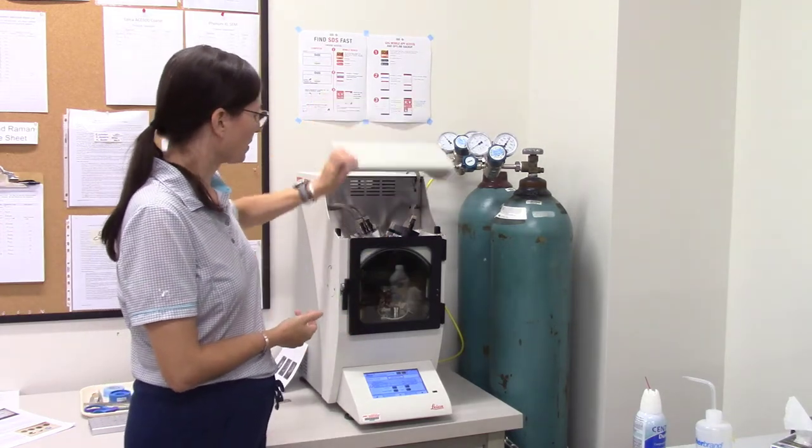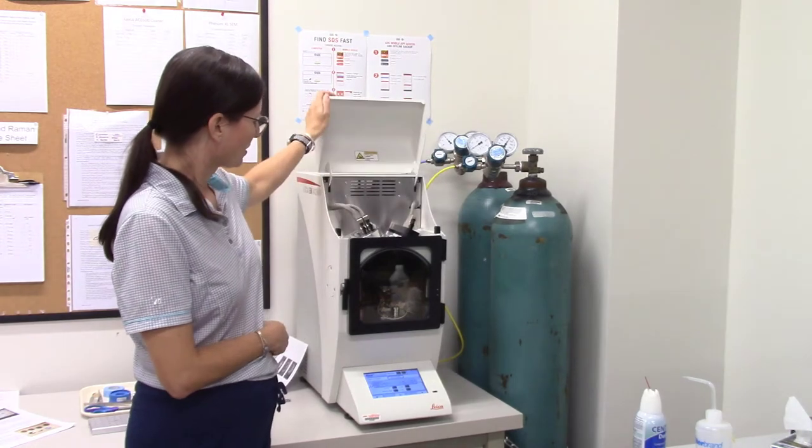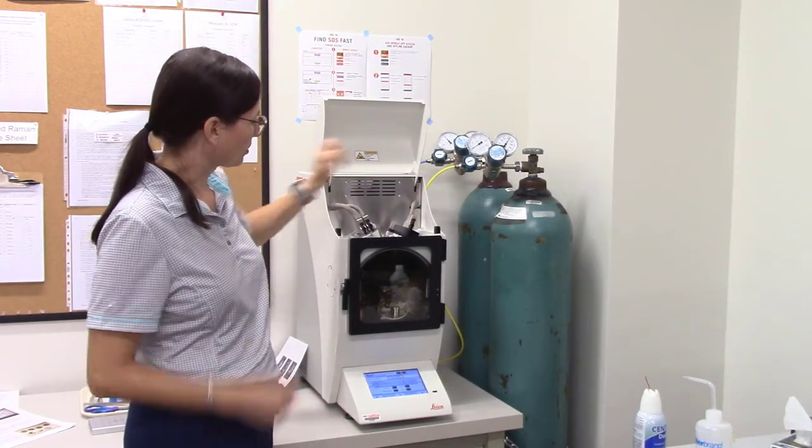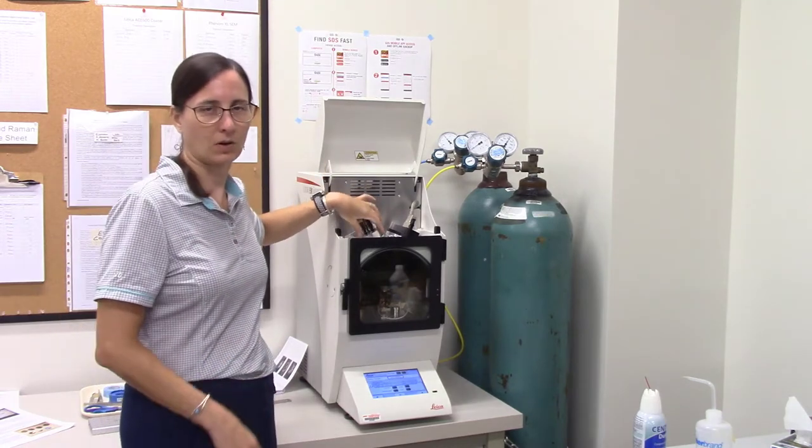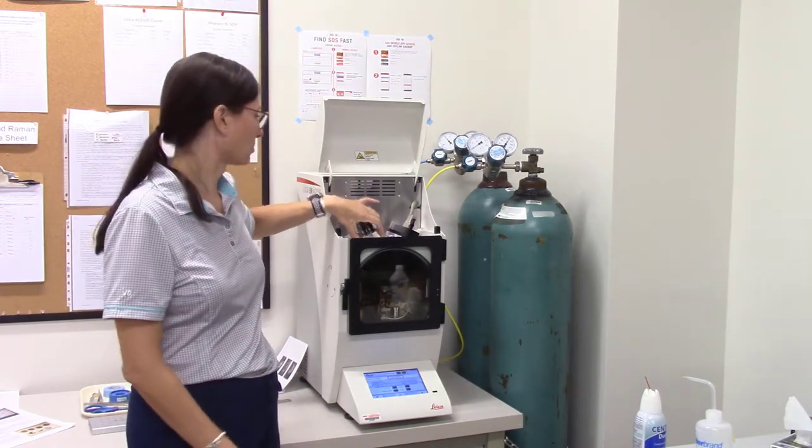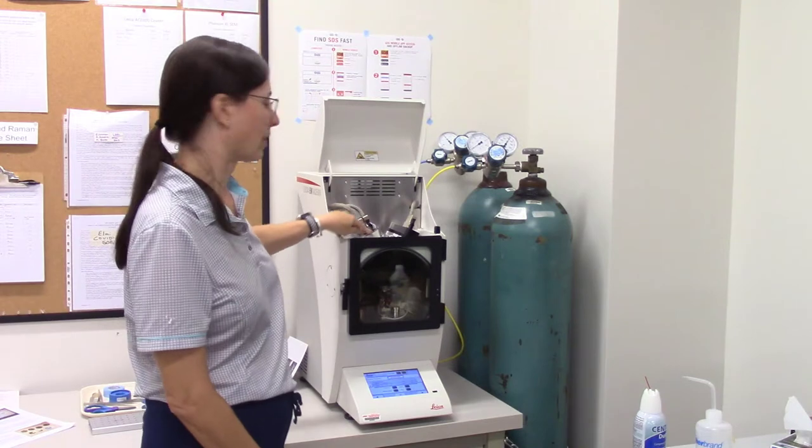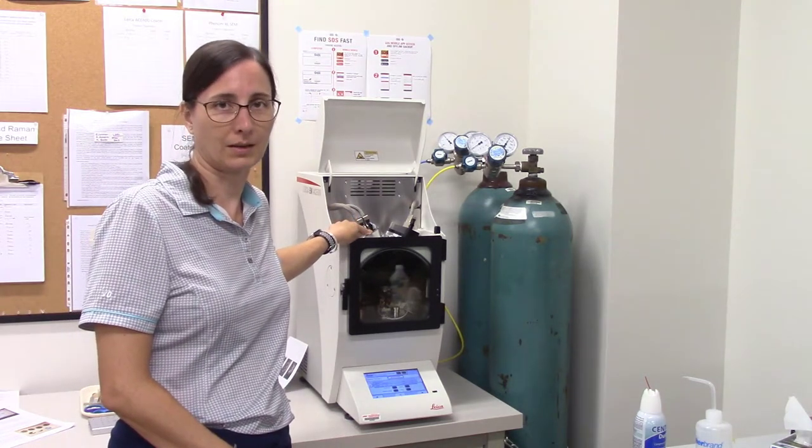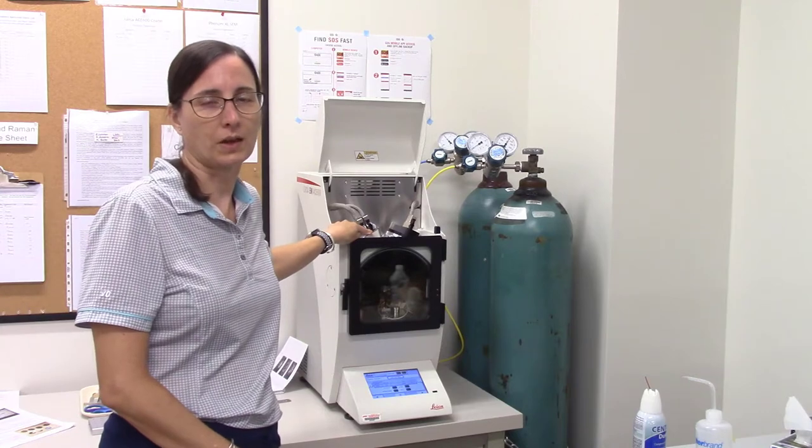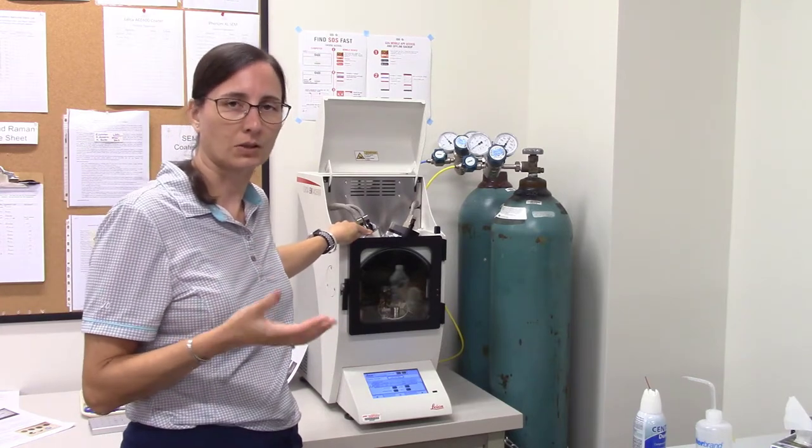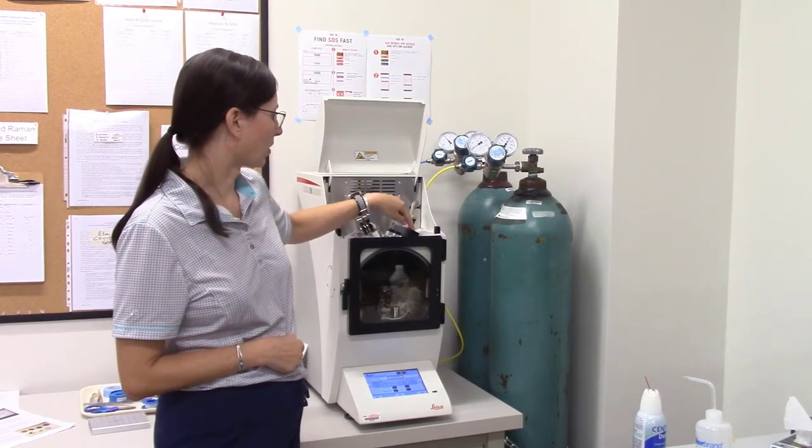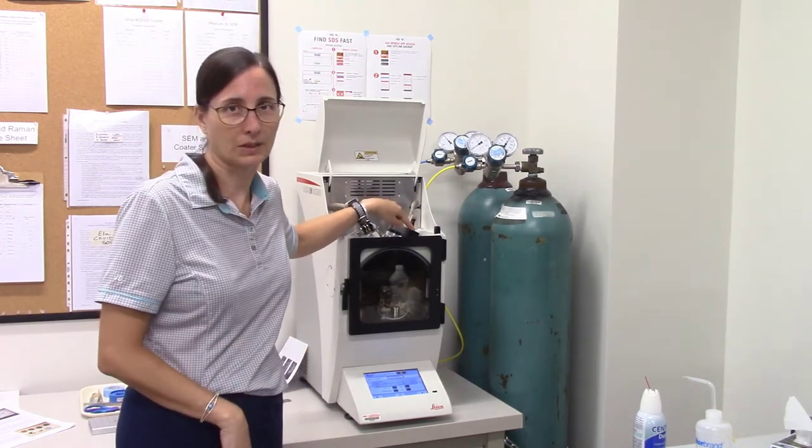So I have the top open here right now. You can see cables coming in. These are two gaskets or openings that have attachments. So this one here on the left is for carbon coating. It's what's going to hold the carbon thread, which will be vaporized so that we can deposit the carbon onto our sample. This is for gold coating, so we won't use it here.